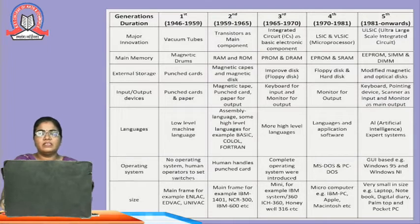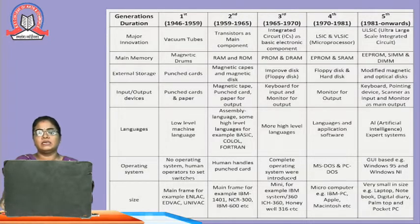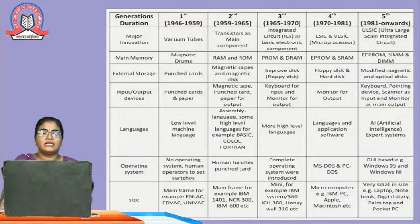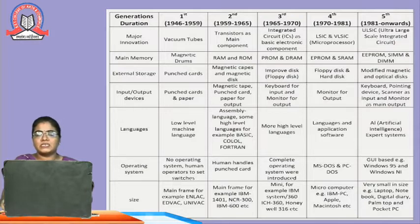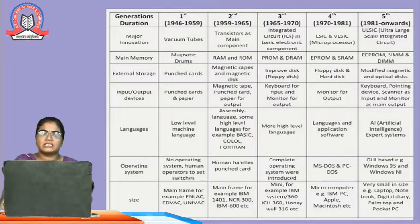Here is a table showing different generations and their innovations, including main memory, external storage, input-output devices, languages, operating system, and size. In the first generation, vacuum tubes were used as the main component, memory was magnetic drums, external storage was punched cards, input and output were done via punched cards and paper, low-level machine language was used, there was no operating system — humans operated by setting switches. Examples include ENIAC, EDVAC, and UNIVAC.